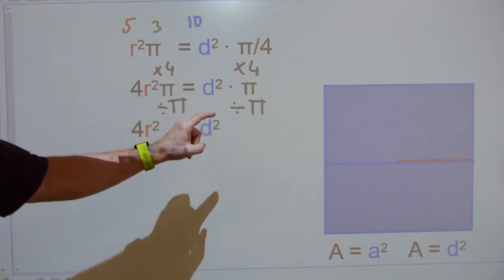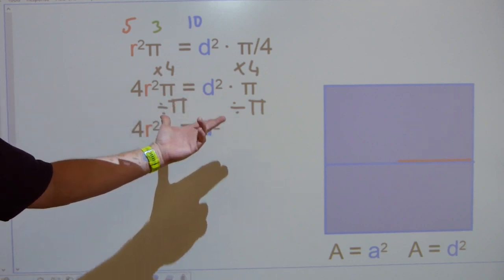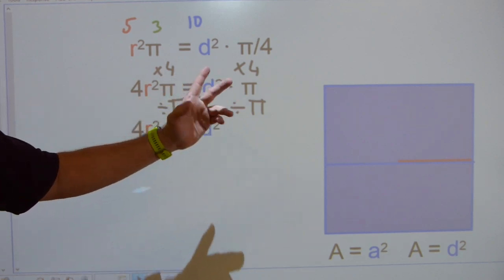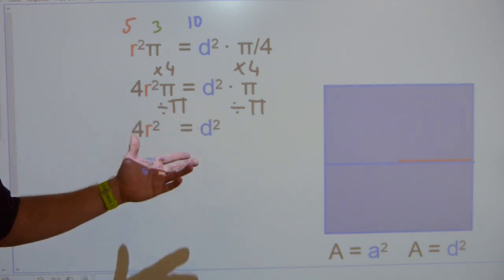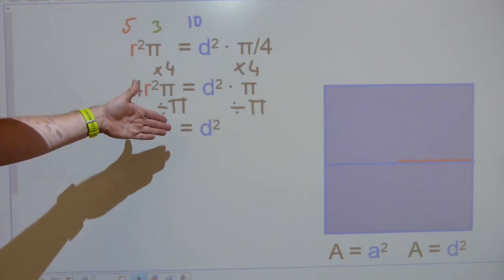We can divide by pi, both sides of the equation. Pi divided by pi is 1. The 1 doesn't get written down anywhere, because it's usually not necessary.